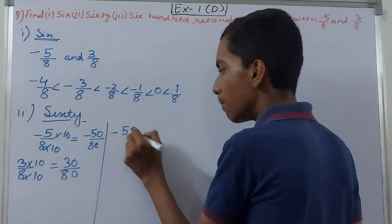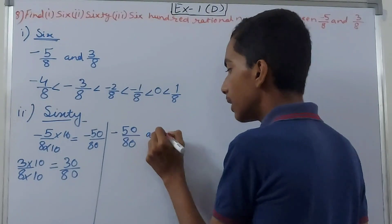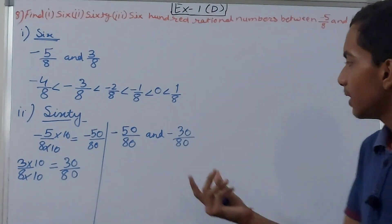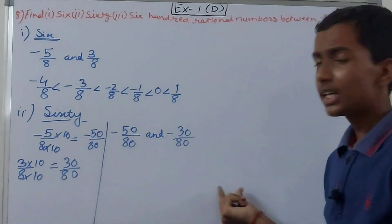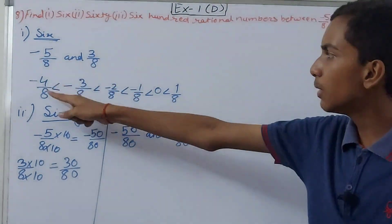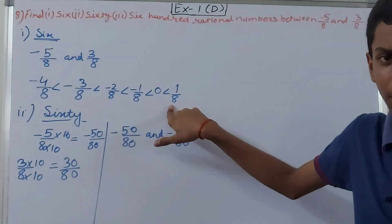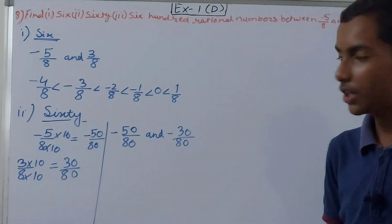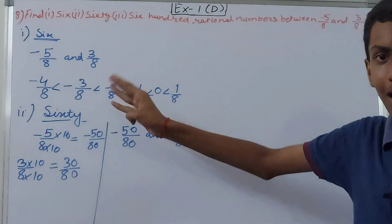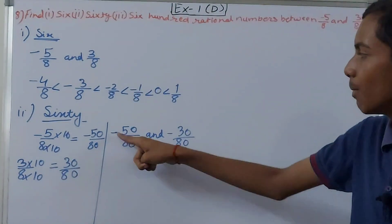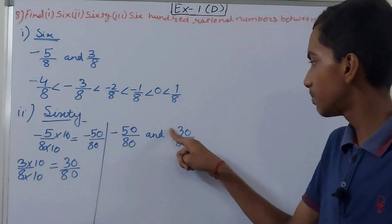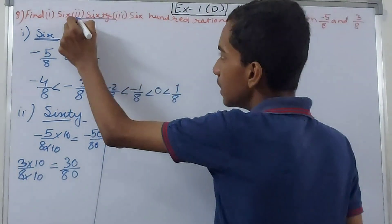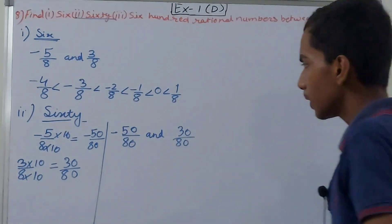Now we need to insert 60 rational numbers between -50/80 and 30/80. With 80 as the denominator it's very easy. Previously with denominator 8 we could only find about 8 rational numbers maximum, but now with 80 we can find up to 80. Between -50 and +30 with denominator 80, how many are available? 80 rational numbers — and we only need 60. So we begin from -49/80.